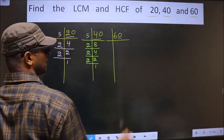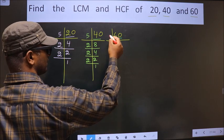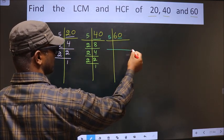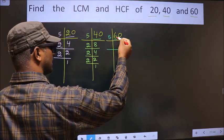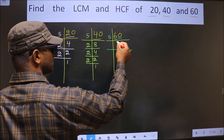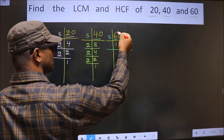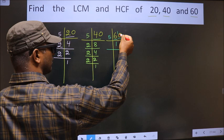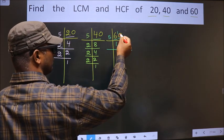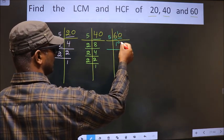Now for this number, the last digit is 0, so we take 5 here. The first digit is 6. The number closest to 6 in the 5 table is 5 times 1. 6 minus 5 is 1, carried forward making it 10. 5 times 2 is 10.